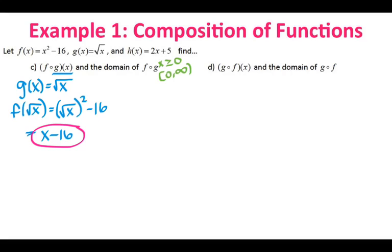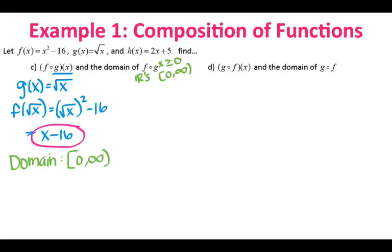Now the domain of f was all real numbers. The domain of the result, x minus 16, is also all real numbers. But we do have to take into consideration that the original domain for g was not all real numbers. Since the original domain for g was 0 to infinity, the domain of the composition is still from 0 to infinity, even though the domain of the actual composition x minus 16 is all real numbers.